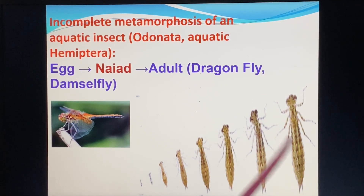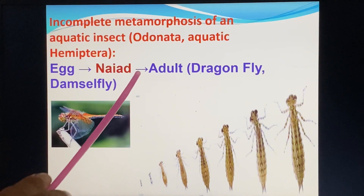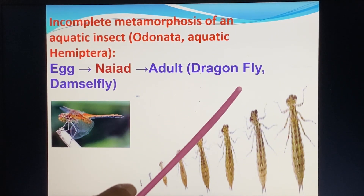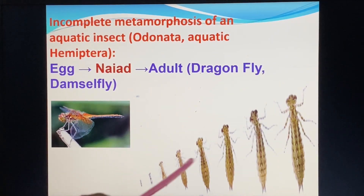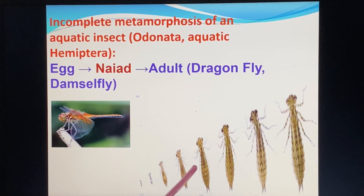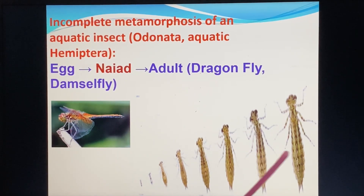The stages of incomplete metamorphosis are: egg, nymph, and adult. For example, the dragonfly — you know the adult like a dragonfly? The nymph goes through a series of nymph stages before becoming the adult.